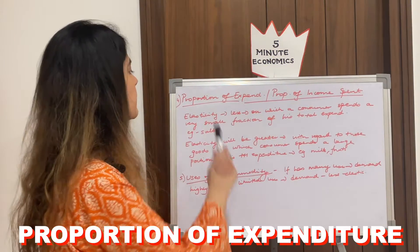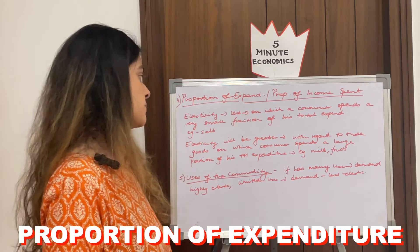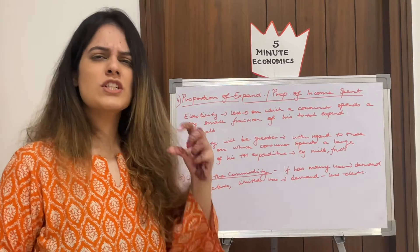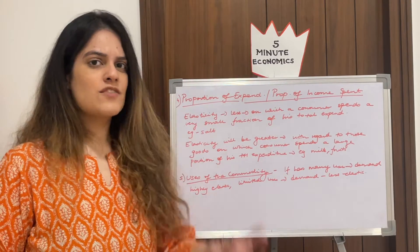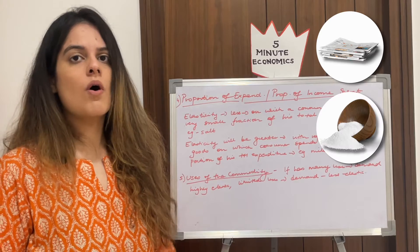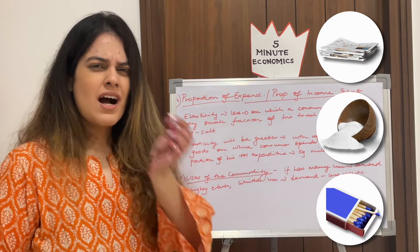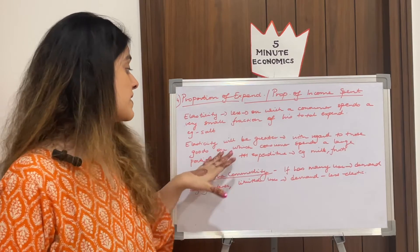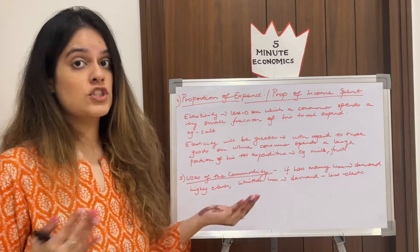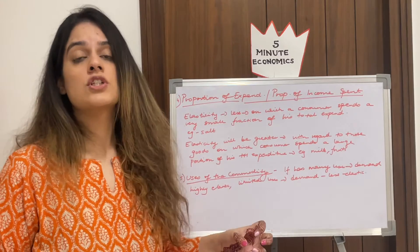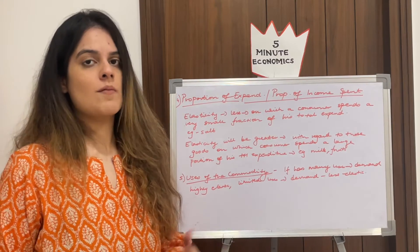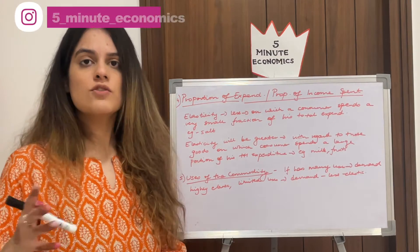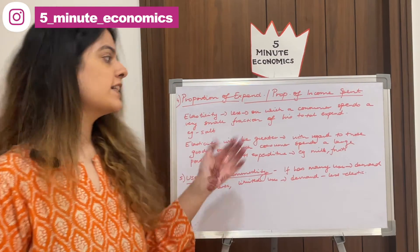The next factor is proportion of expenditure or proportion of income spent. Elasticity is low for goods on which consumers spend a small fraction of their income — like newspapers, salt, or matchboxes. But elasticity is greater for things on which a large amount is spent, such as milk, where a rise or fall in price will definitely affect demand.